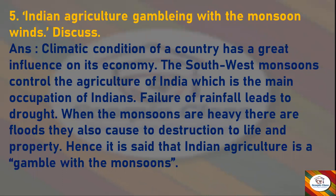Next question: discuss Indian agriculture as a gamble with the monsoon winds. Answer: the climatic condition of a country has a great influence on its economy. The southwest monsoons control the agriculture of India, which is the main occupation of Indians. Failure of rainfall leads to drought, and when the monsoons are heavy there are floods, which also cause destruction to life and property. Hence it is said that Indian agriculture is a gamble with the monsoons.